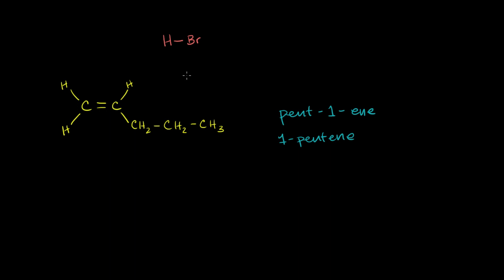So let's think about how these two characters might react with each other in some type of solvent. Usually when a solvent's not specified, it's usually water or alcohol. If this was water, then we would have a solution of hydrobromic acid. But let's not worry about that right now — let's just focus on how these two characters might react with each other.